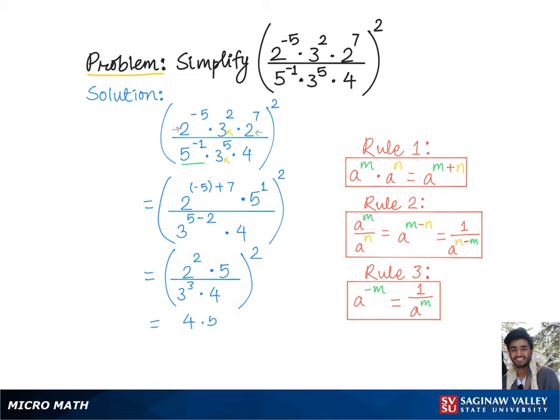The 4s cancel each other out since one is in the numerator and another in the denominator, so we are left with 5 over 27 squared.